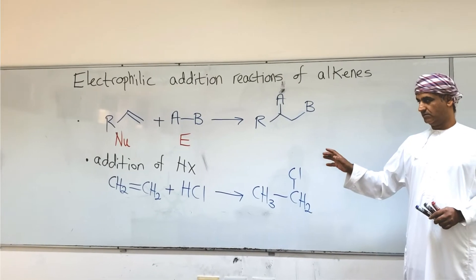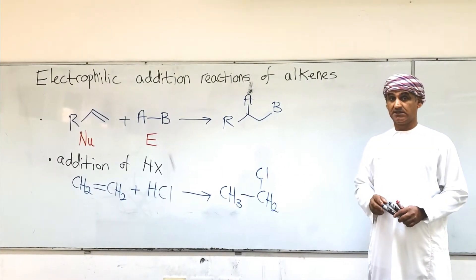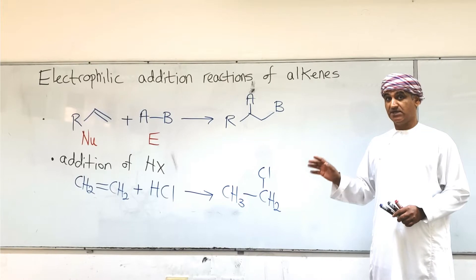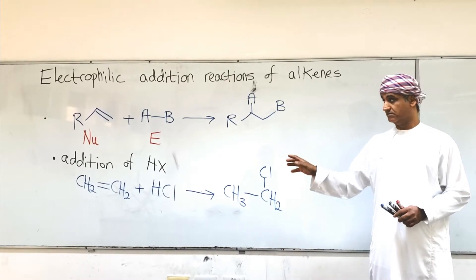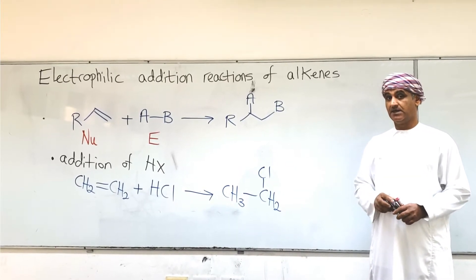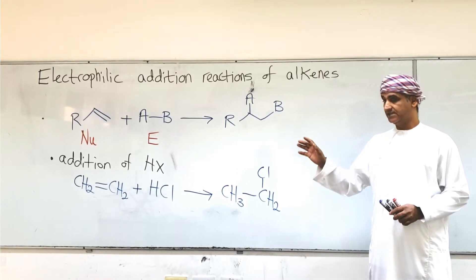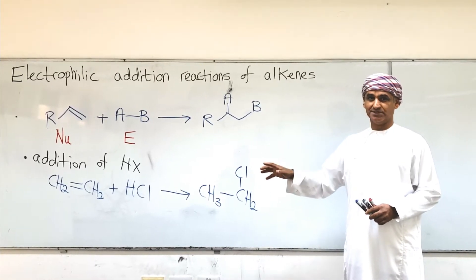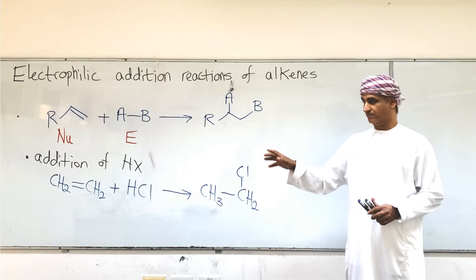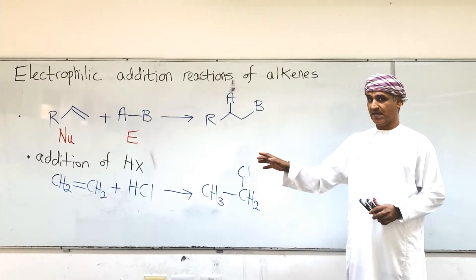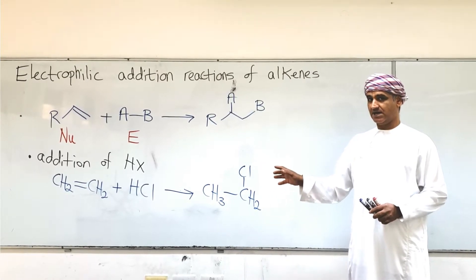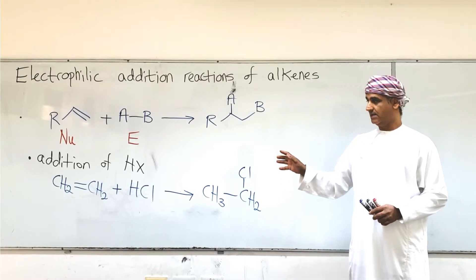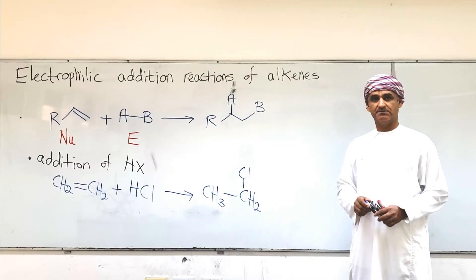If you look at ethylene, the two carbon atoms have the same number of hydrogen atoms — it is a symmetrical alkene. So it doesn't really matter where H bonds, because both carbons have the same number of hydrogen atoms.